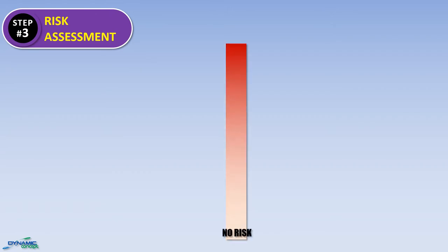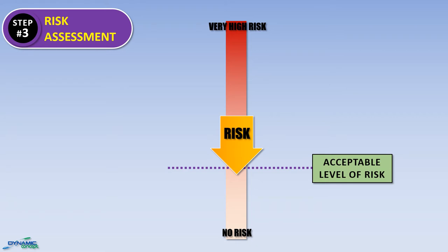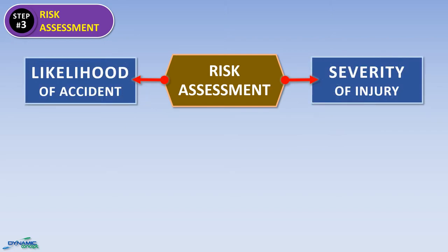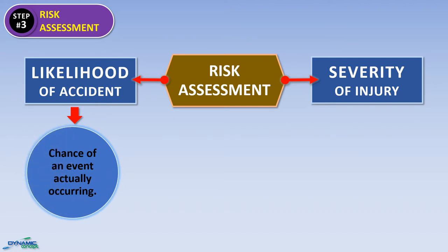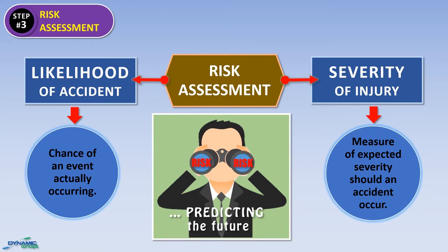Once the hazard has been identified, the risk associated with the hazard must be assessed. At this stage, you need to evaluate each identified hazard to determine the level of action required to reduce the risk to an acceptable level. You need to consider two key factors: likelihood and severity of the event happening. Likelihood is defined as the chance of an event actually occurring — any event which may cause injury or harm to a person. Severity is a measure of expected severity should an accident occur; in other words, the amount of damage or harm a hazard could create. Judging these two factors is like predicting the future — you can only make a best estimate on the basis of the information available.